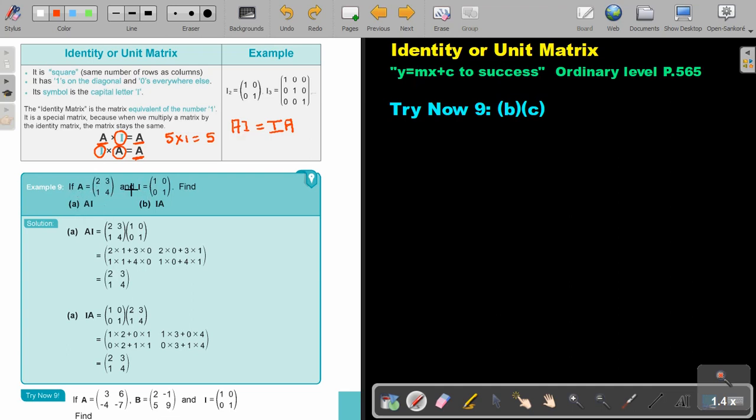If A is this and the Identity Matrix is this, find AI. So basically, I just do exactly the same. I take a row and I multiply it by a column. So 2 times 1 is 2 and 3 times 0 is 0. So 2 plus 0, it stays 2.